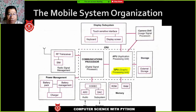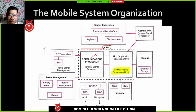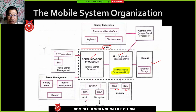In mobile system organization, the main component is the CPU. In mobile, we have a communication processor, an application processor, and external memory storage like memory cards. We also have internal storage like RAM and ROM. Mobile phones can receive calls through audio systems like the mic and speakers. We also have the power management system which includes the battery and charger, and the mobile system also needs an RF radio frequency transceiver.